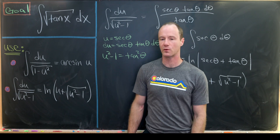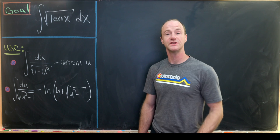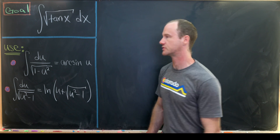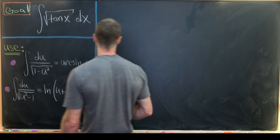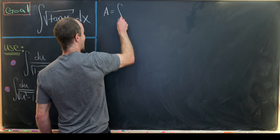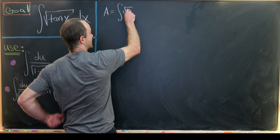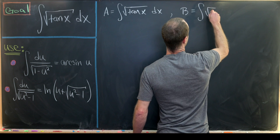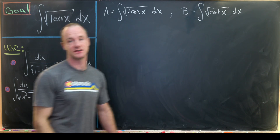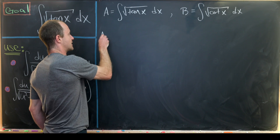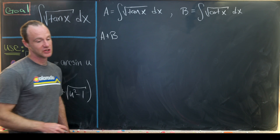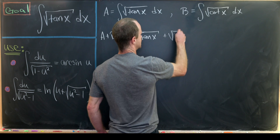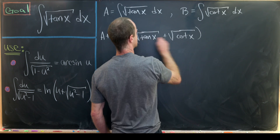Now we're ready to tackle our original integral. We'll use a clever trick: consider not just A = ∫√(tan x) dx, but also B = ∫√(cot x) dx. We'll look at both the sum and the difference of these two integrals, starting with A + B, which is the integral of √(tan x) + √(cot x) dx.